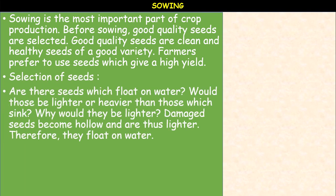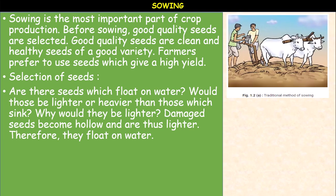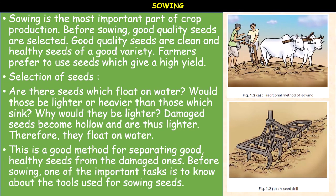For seed selection, a simple method is to soak the seeds in water. Seeds that float on water are lighter — because damaged seeds become hollow and are thus lighter, and therefore they float. Seeds that sink are the good, healthy ones. This is a good method for separating healthy seeds from damaged ones before sowing.